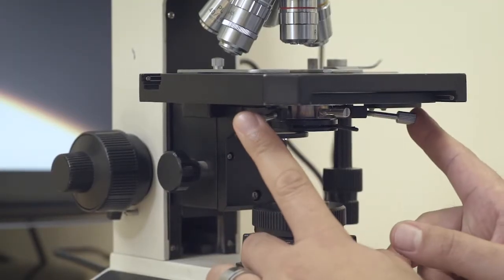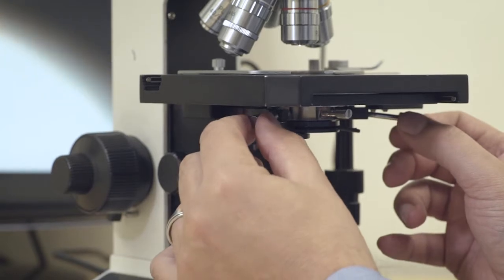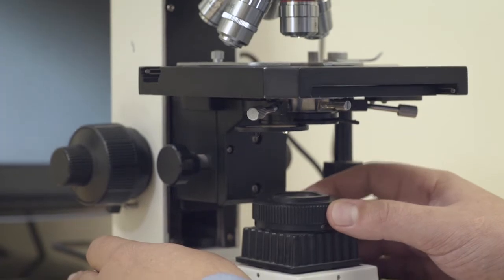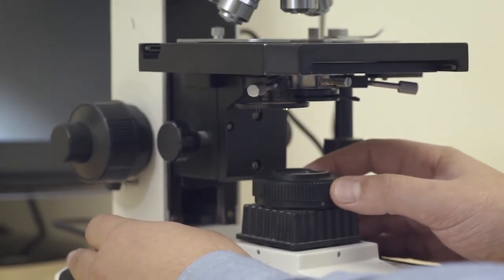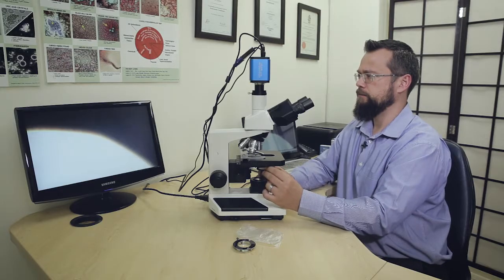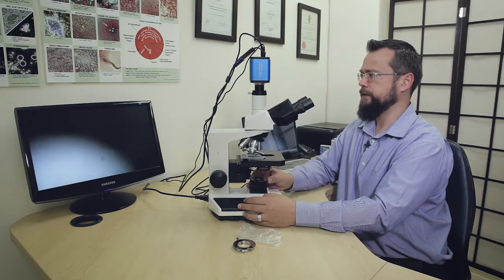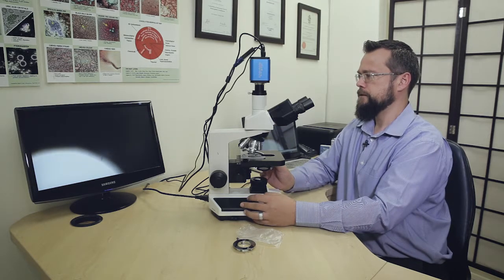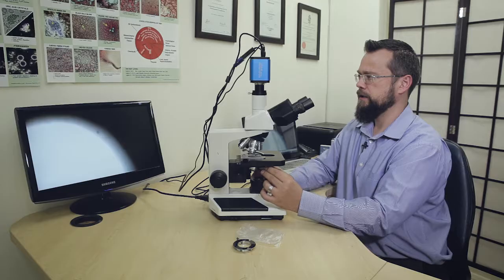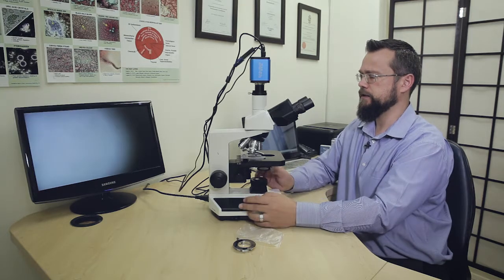So we're going to use the condenser centering knobs to move this light into the field of view. I'm going to close the field iris diaphragm there again. And then keep moving this into position. Let's close the ring again. So you can see on the screen that we're just slightly off center. As we close the ring, we're just moving the circle of light into the field of view.